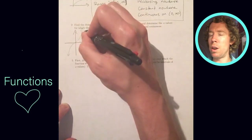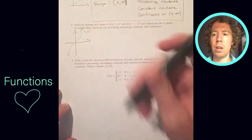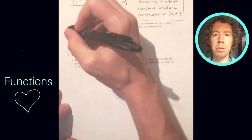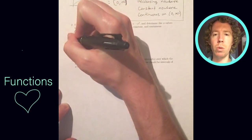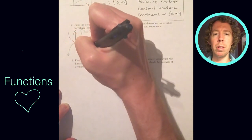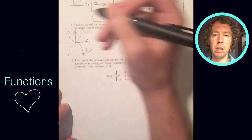We'll need to know their domain and range. So for both of them, you can plug in any x value you want. You never get any problems like dividing by zero or the square root of a negative number. So the domain is all real numbers, negative infinity to positive infinity.